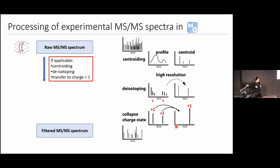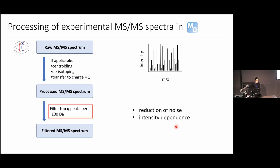After centroiding, deisotoping, and charge state collapsing, the MS/MS spectrum looks less populated but still retains important information. However, it's still quite populated because we haven't addressed noise yet. There is another step in MaxQuant where we filter the top peaks per 100 Da window to deal with this.